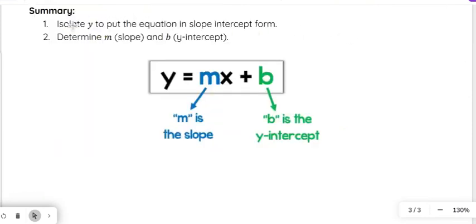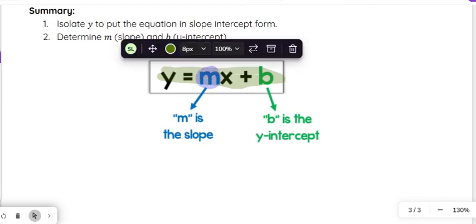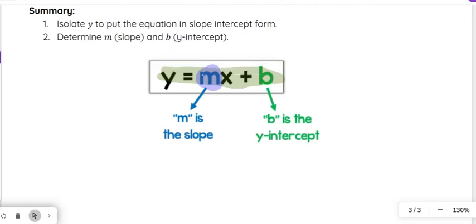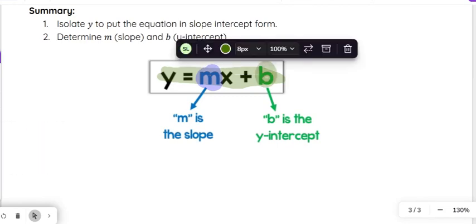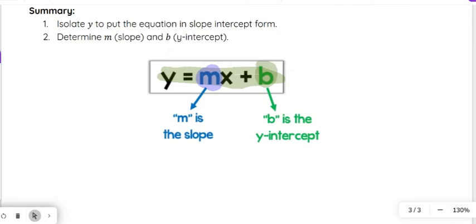So in summary, we always want to get y by itself, and then once we have y by itself, then it will be in slope-intercept form, this y = mx + b. At that point, you can calculate the slope by finding the number or the coefficient of the x, the number being multiplied by the x. That number could be a whole number, it could be a fraction, but it is the slope.